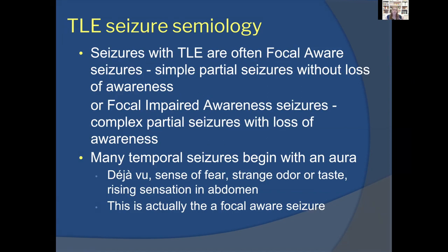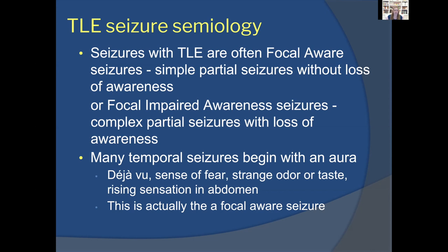Temporal lobe epilepsy often produces focal aware seizures — formerly called simple partial seizures — without loss of awareness, or focal impaired awareness seizures, formerly called complex partial seizures. Many temporal lobe seizures begin with an aura, which is now considered a form of focal aware seizure. The aura can be hard to describe — déjà vu, a sensation of fear or even joy, a strange odor or taste, or a rising abdominal sensation similar to cresting a roller coaster — which can sometimes precede a larger focal impaired awareness seizure.